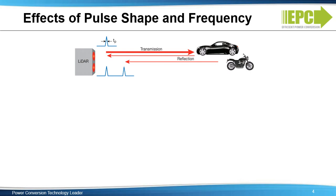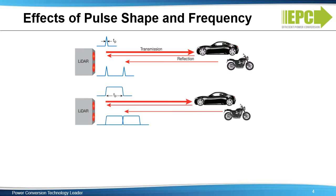Consider first the ideal light pulse with infinitesimal pulse width. The pulse is transmitted, travels to the target, and some portion reflects back toward the detector. Wider pulses can overlap, making them harder to distinguish from each other and reducing distance resolution. For autonomous vehicle navigation, the system must be able to identify and track objects around the vehicle, so pulse widths must be as short as possible.